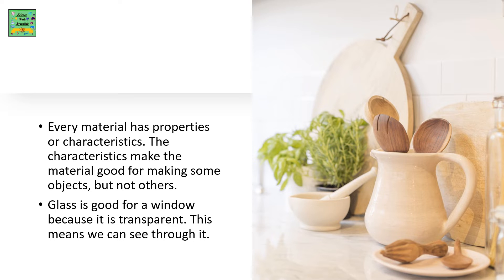Every material has properties or characteristics. The characteristics make the material good for making some objects but not others. Glass is good for a window because it is transparent — this means we can see through it.